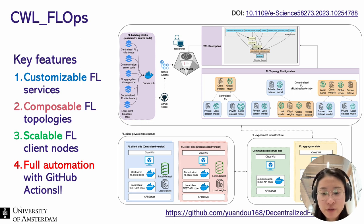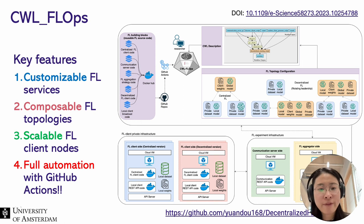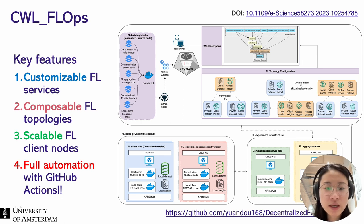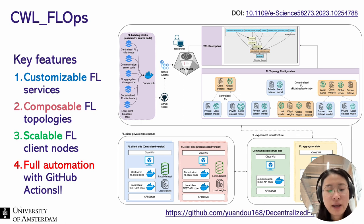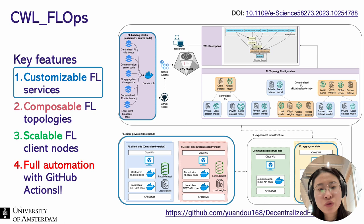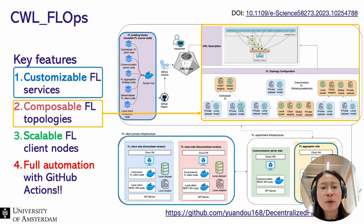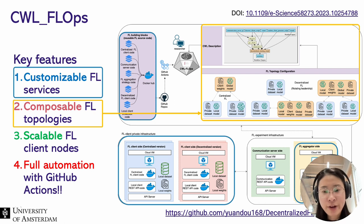The architecture of CWFLOps has been published in a poster at a conference last year. We identified four key features of CWFLOps. It can support customizable FLOps services by reusing source code and reconfiguring them as learning building blocks through GitHub repositories and Docker Hub. In terms of composable FLOps topology, it enables users to design and compose their own federated learning workflows in CWL. To support scalable FLOps clients, we developed a communication REST API that can discover FLOps client nodes and make clients register to initialize a federated learning setup.